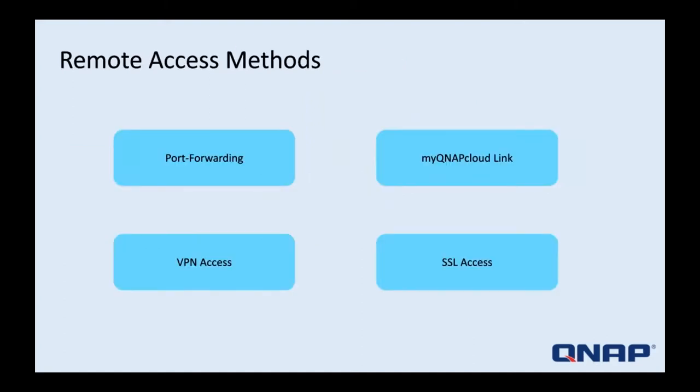There are a few ways to achieve remote access from outside your network. You can forward ports so that the NAS service port is open and directly accessible. You can use the MyQNAPCloud Link service, which routes connections through QNAP servers to the NAS. Or you can access your NAS over an encrypted VPN connection or SSL connection.